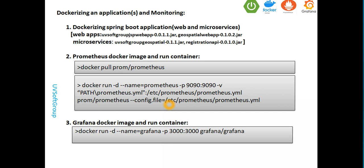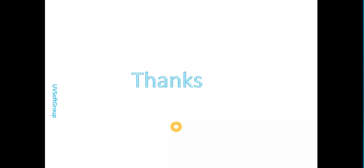If you follow all the screencasts in this series, I believe you can get a really good understanding of how to implement microservices or a web application and integrate all the dependencies and properties configuration with Spring Boot Actuator, Micrometer, Prometheus, and Grafana. I will continue with the Prometheus part — how to start it, how to visualize all the metrics, and then how to push that visualization into Grafana.